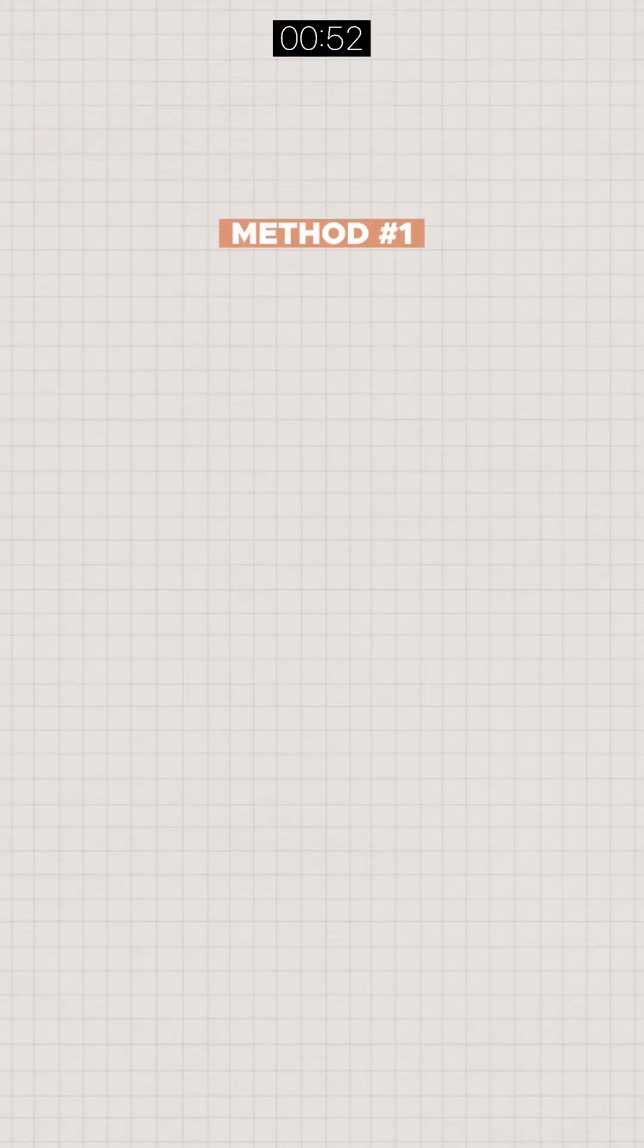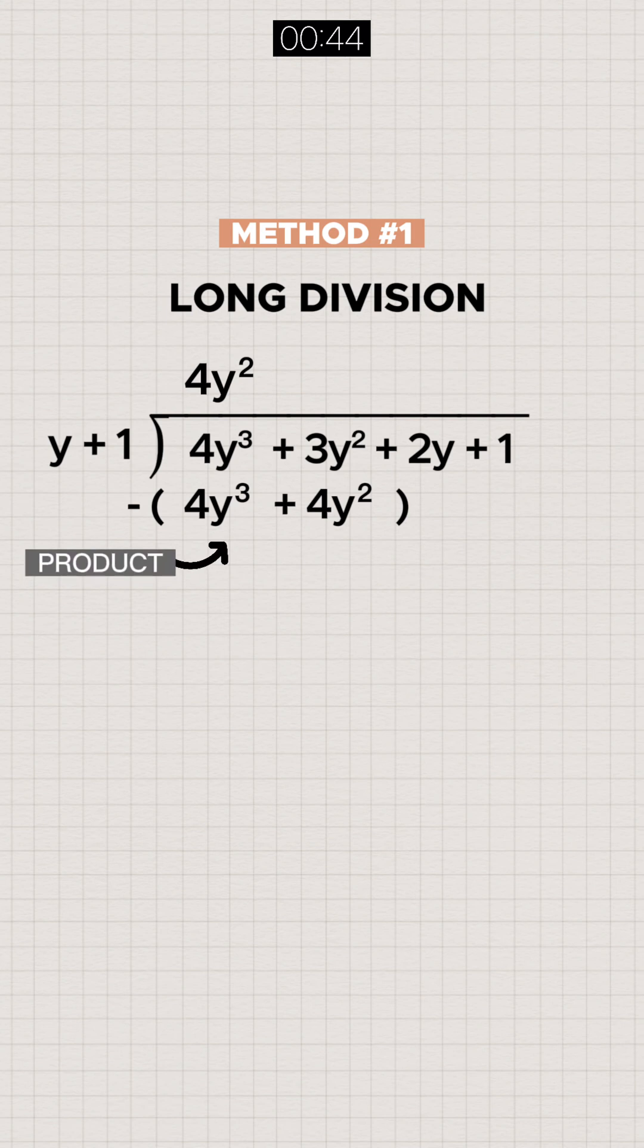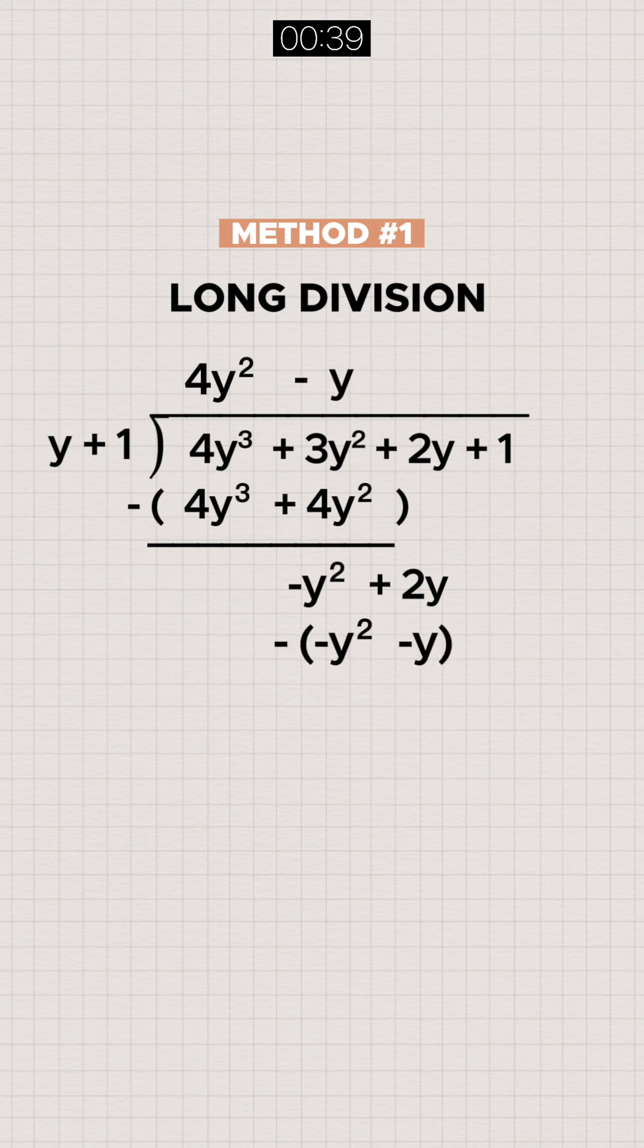For long division, the step is similar to how we do a numeric long division, where we repeatedly identify the possible quotient that gives products that are either exact or nearest but smaller than the relevant dividend. The leftover at the end is the remainder, and we can express the answer as follows.